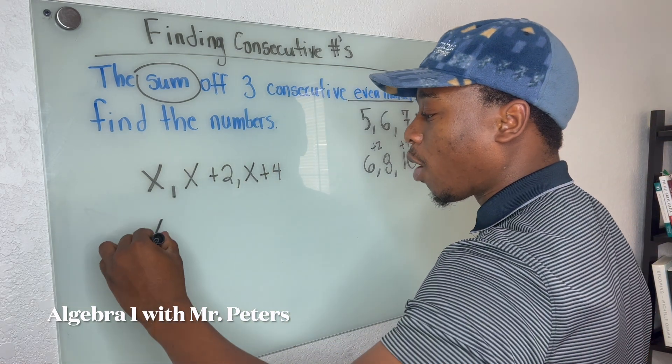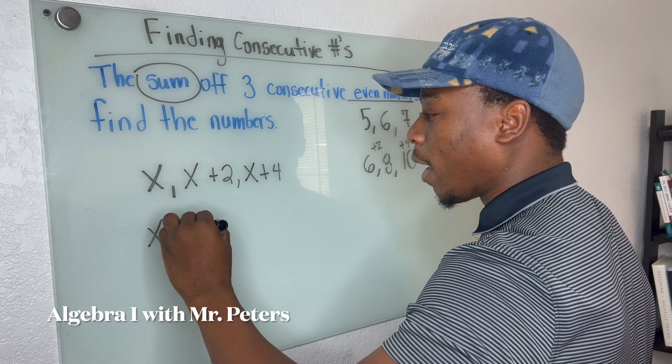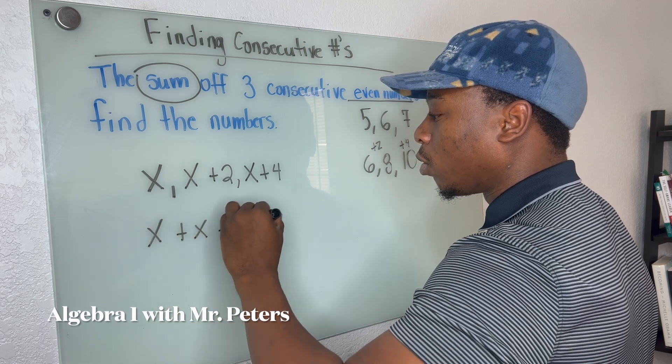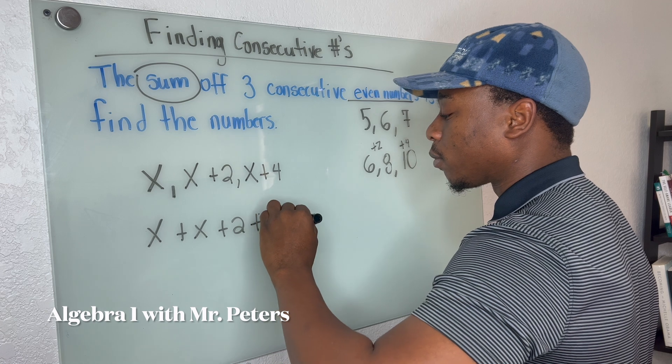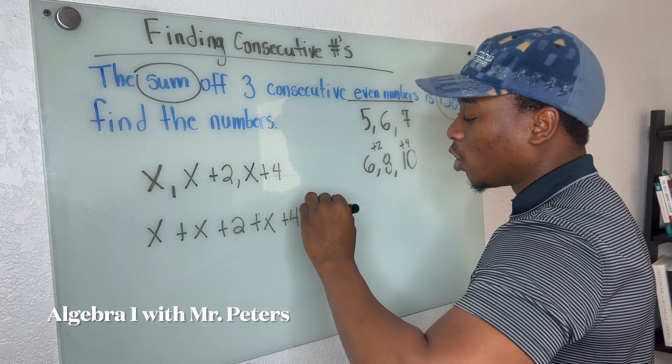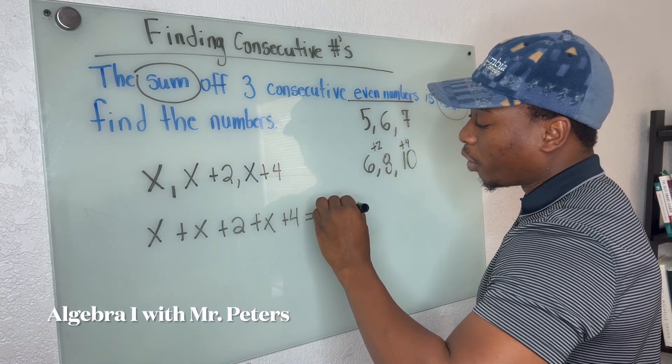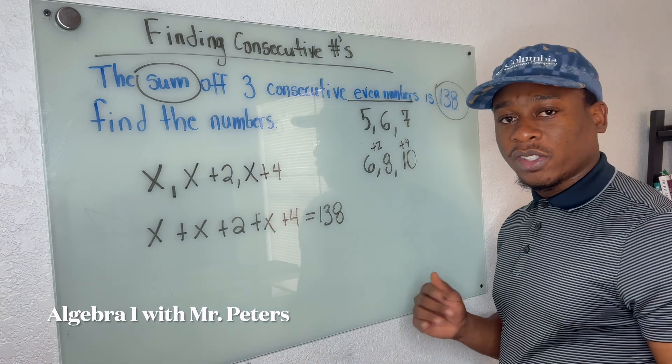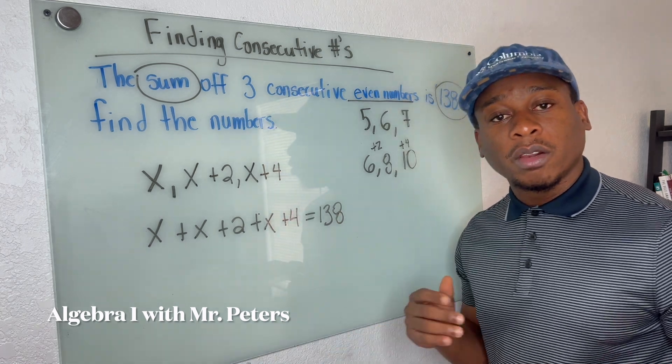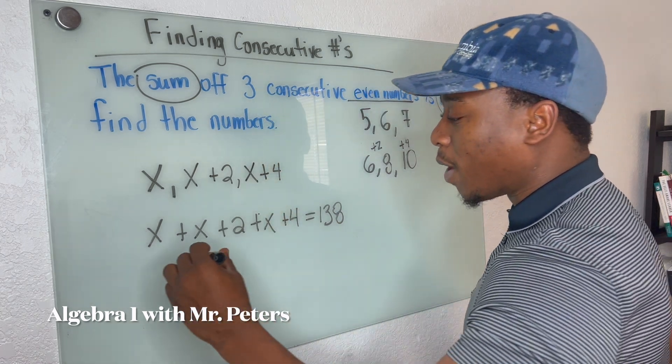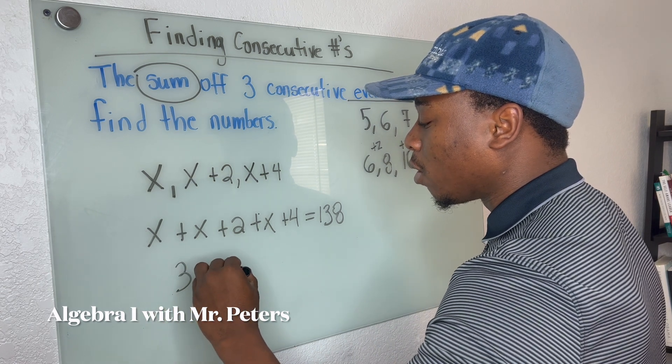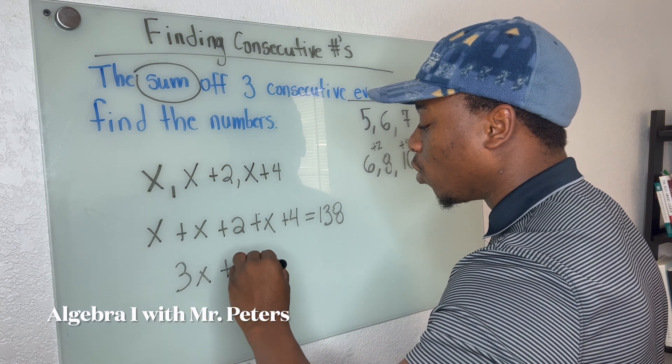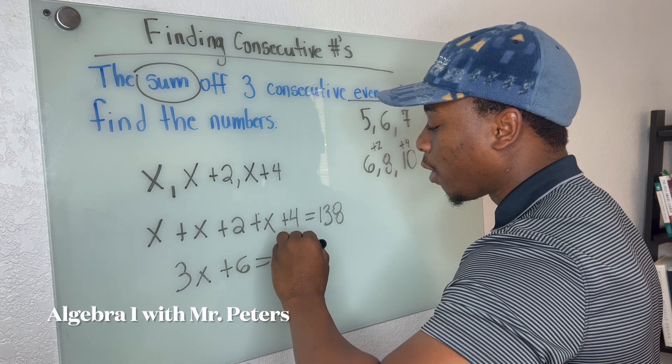So we're going to set our problem up like this. We're going to add all these x's together. And we know it's going to equal 138. Now after setting up the problem, this turns into a regular equation. So we're going to combine our like terms to get 3x plus 6 is equal to 138.